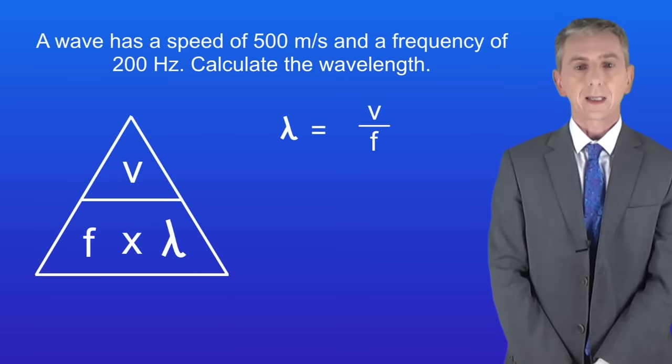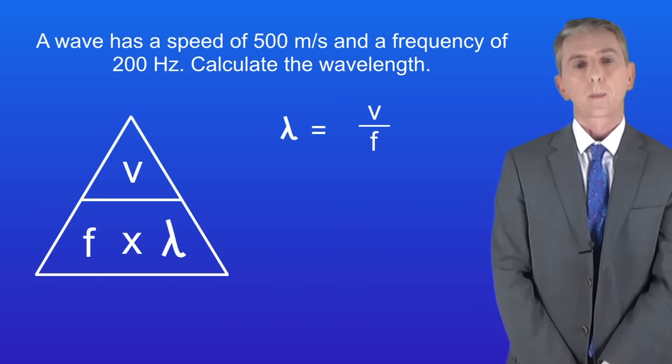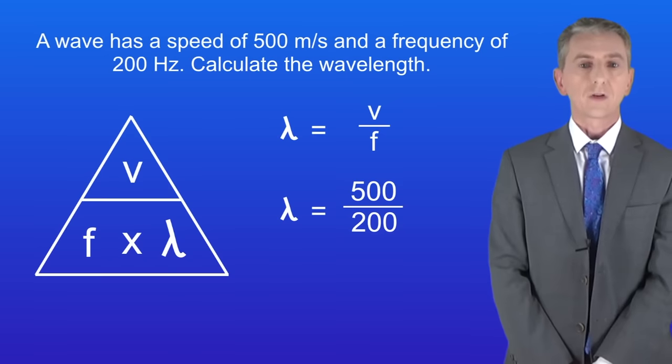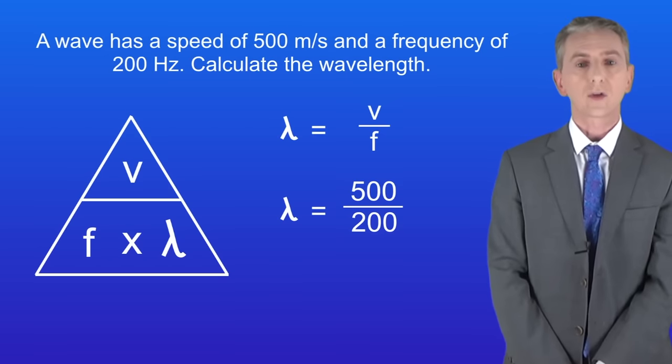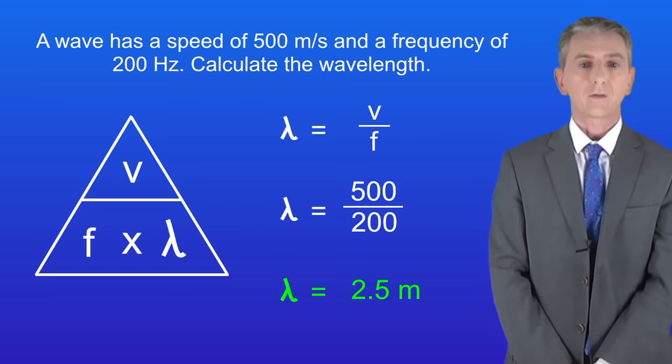Okay, so we're calculating the wavelength. To do this, we need to divide the wave speed by the frequency. The wave speed is 500 meters per second, and the frequency is 200 Hertz. Dividing 500 by 200 gives us a wavelength of 2.5 meters.